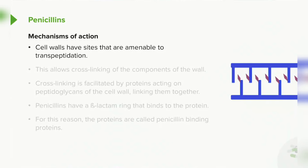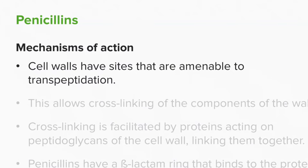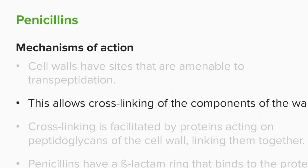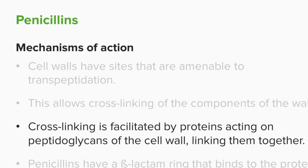Penicillins are active on the cell wall. The cell walls have sites that are amenable to transpeptidation. This allows cross-linking of the components of the wall, and when you have cross-linking, you have a stronger wall. Cross-linking is created or facilitated by proteins that act on those peptidoglycans of the cell wall and link them together, much like a zipper does.